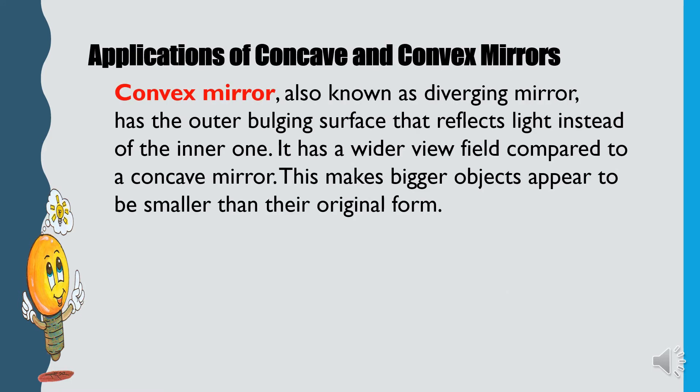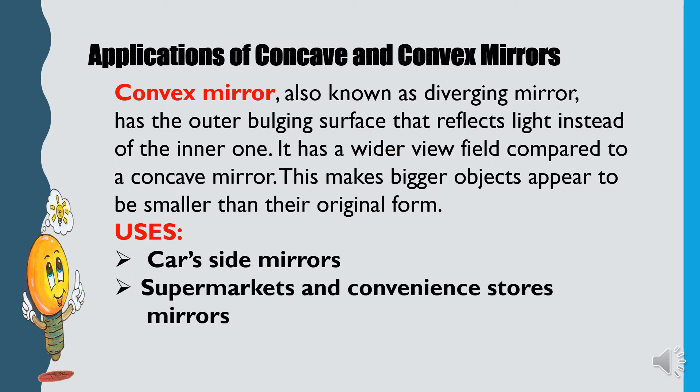On the other hand, convex mirror, also known as diverging mirror. The mirror has the outer bulging surface that reflects light instead of the inner one. It has a wider view field compared to a concave mirror. This makes bigger objects appear to be smaller than their original form. It is used as cars side mirrors and in supermarkets and convenience stores.